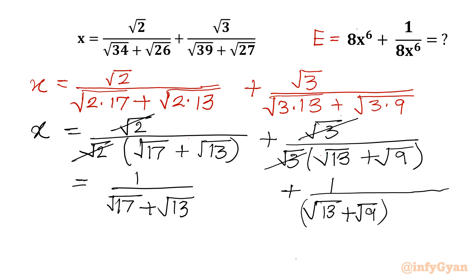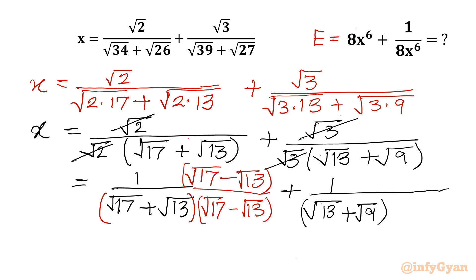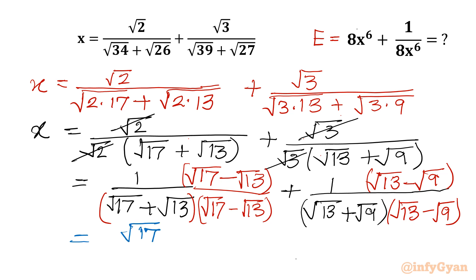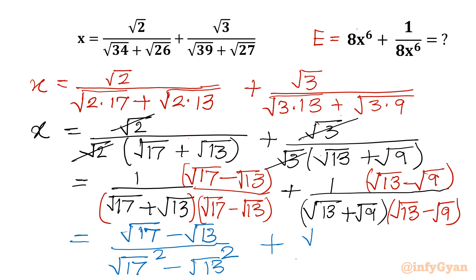Now I will rationalize. I will multiply by (√17 − √13) in the numerator and denominator. Similarly, I will multiply by (√13 − √9) in the numerator and denominator. The denominator becomes a difference of two squares: (√17)² − (√13)² and (√13)² − (√9)².